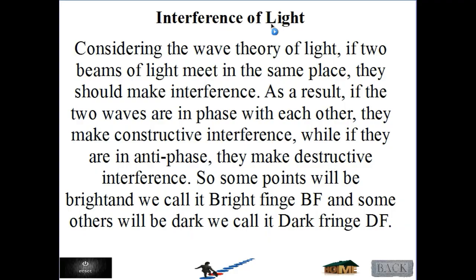Since our chapter will focus on the interference of light only, we limit our study to light waves. Considering the wave theory of light, if two beams of light meet in the same place, they should produce interference. If the two waves are in-phase, they make constructive interference. While if they are in anti-phase or out of phase, they make destructive interference. So some points will be bright — we call it bright fringe — and some others will be dark — we call it dark fringe.